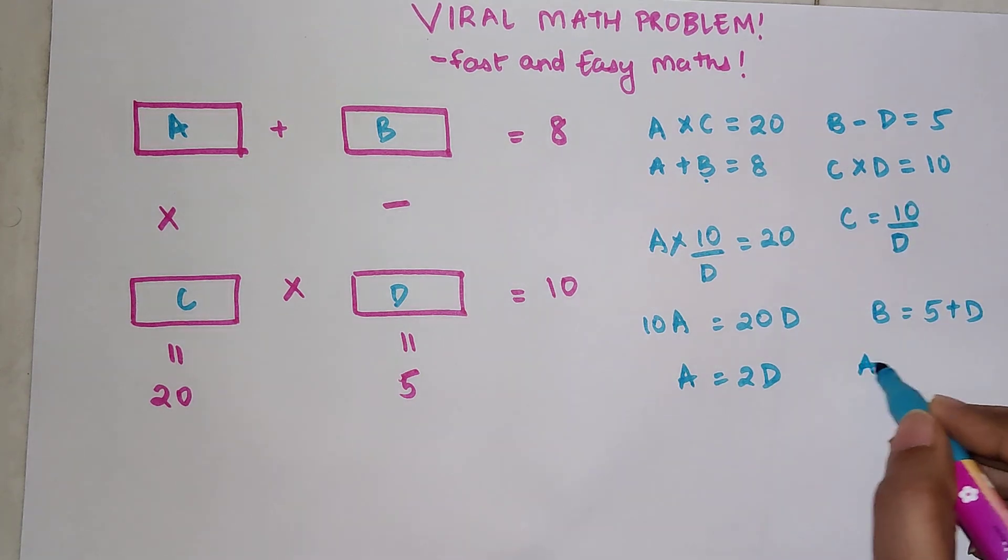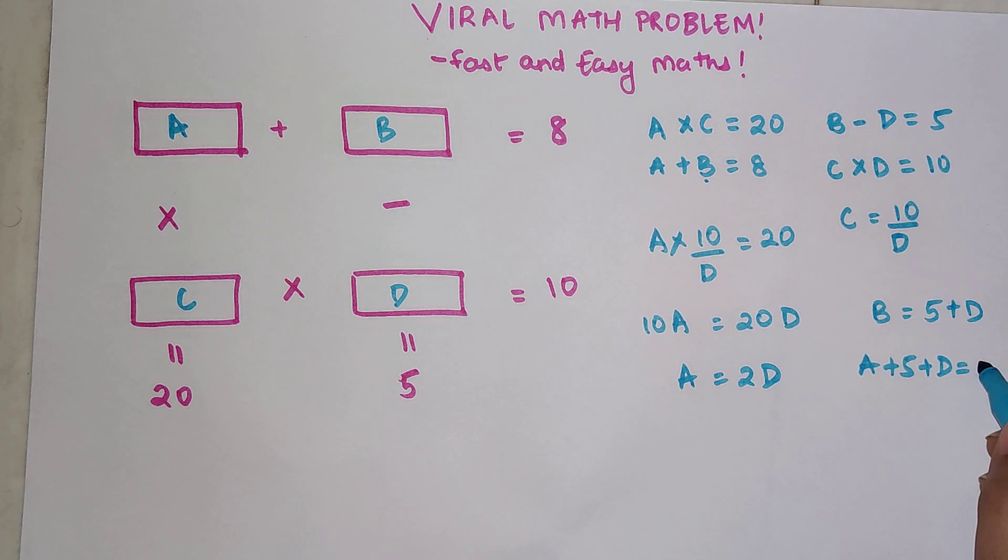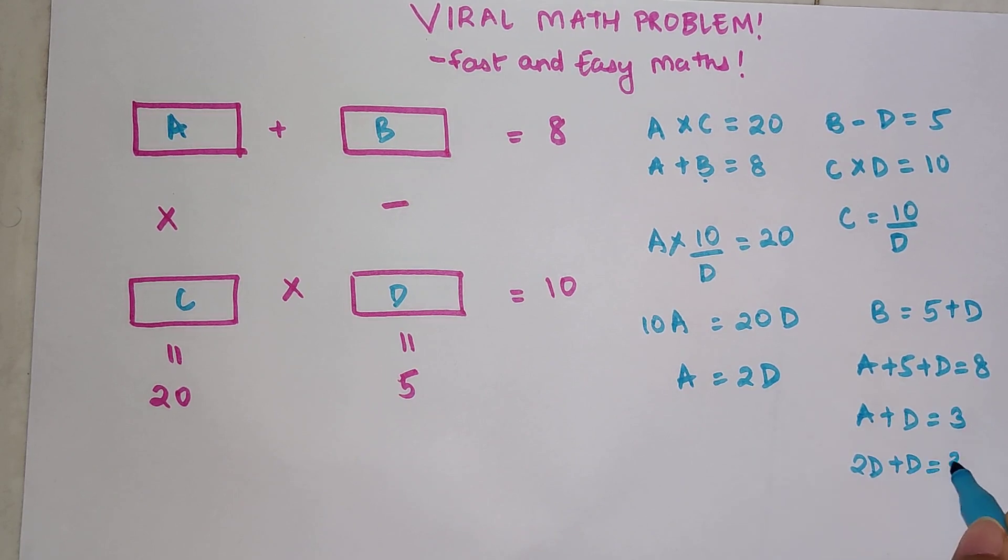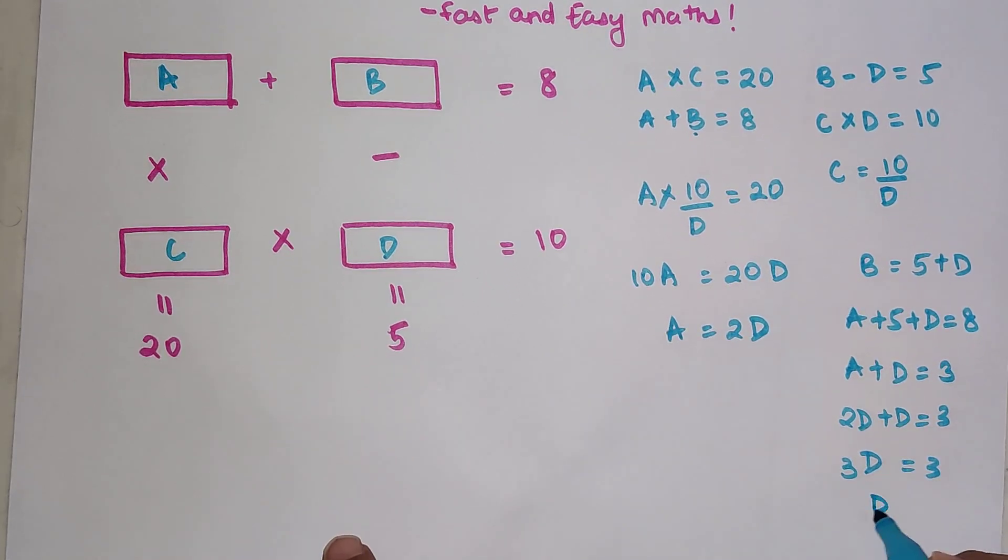Putting this value of B over here, I will get A plus 5 plus D equals 8. So I can write A plus D equals 3. And instead of A, I can write just 2D, so 2D plus D equals 3. From here I will have 3D equals 3, and the value of D will now become 1, dividing both sides by 3.